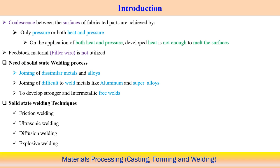Why go for solid state joining instead of fusion welding, laser, or electron beam welding? Joining dissimilar metals or alloys is problematic in fusion welding because inter-metallic compounds form readily, making the weld joint brittle. To avoid this, solid state welding is preferred — inter-metallic formation still occurs but to a much lesser extent than in fusion welding. That is one key reason to choose solid state joining for dissimilar metal welding.